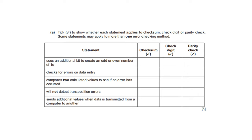Tick to show whether each statement applies to checksum, check digit, or parity check. Some statements may apply to more than one method. The first statement — uses an additional bit to create an odd or even number of ones — that is parity check. Checks for errors on data entry — that is check digit. Compares two calculated values to see if an error has occurred — both checksum and check digit. Will not detect a transposition error — that is parity check. Sends additional values when data is transmitted from one computer to another — that is checksum and parity check; check digit is not used for data transmission.